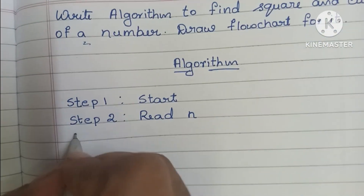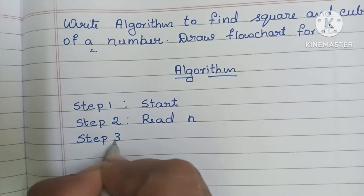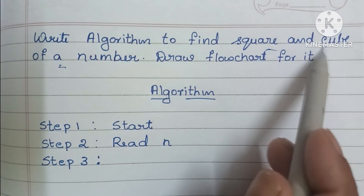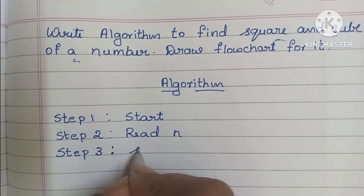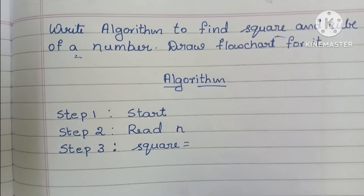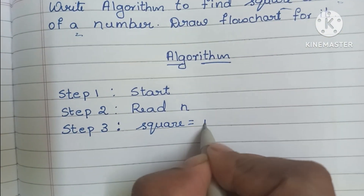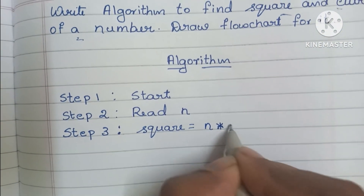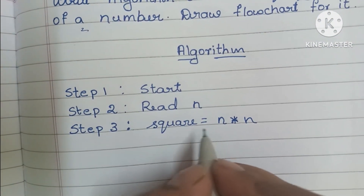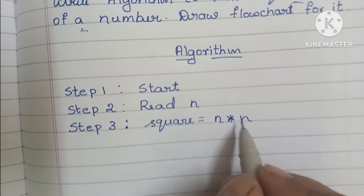In step 3, we have to start the calculation. Here we have to find square and cube of a number. First we have to find square. To find square, we have to multiply a number two times: N × N. This is the formula to find the square of a number — N × N.